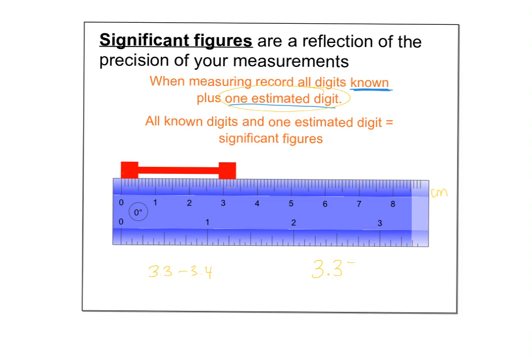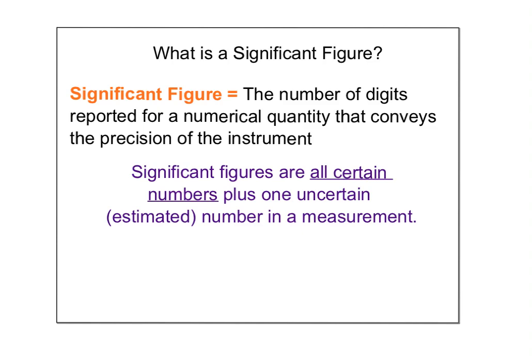Mr. Charvela looks at the same measurement and says it's 3.36 centimeters — he estimates a 6, I estimate a 5. We are both correct because we recorded what's certain plus one estimated digit. Significant figures are all of the certain digits plus one estimated digit. A sig fig tells us the precision of an instrument — even that one uncertain digit is significant.